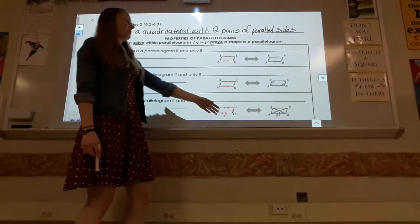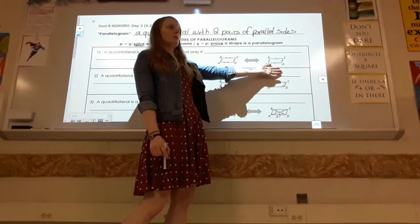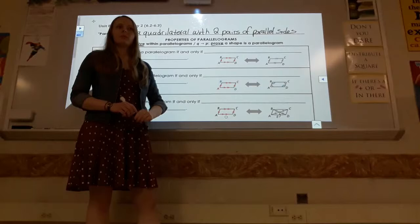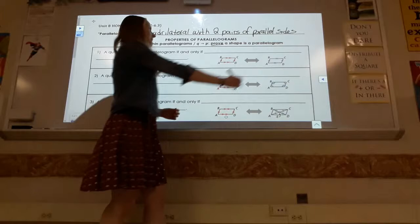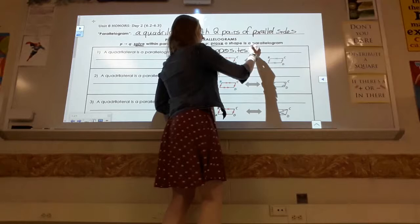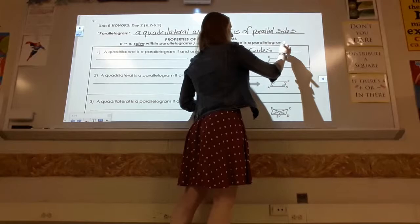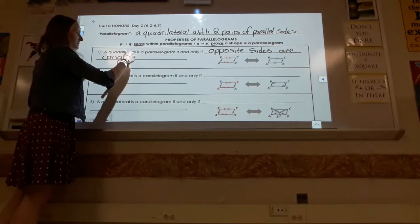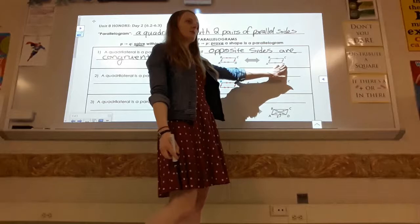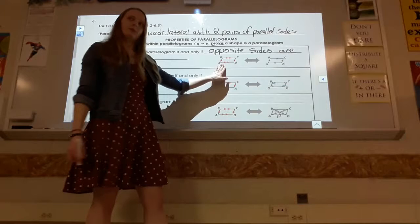Property one: a quadrilateral is a parallelogram if and only if opposite sides are congruent. We already know they're parallel by definition — this tells us what else we can figure out. If you know something is a parallelogram, its opposite sides are congruent, and vice versa: if a shape has congruent opposite sides, it must be a parallelogram.